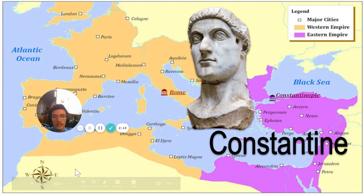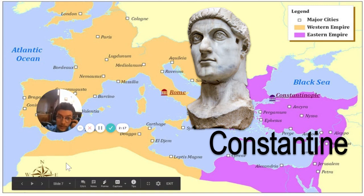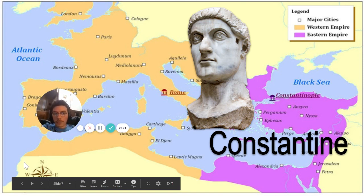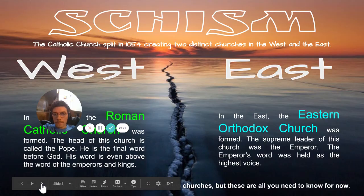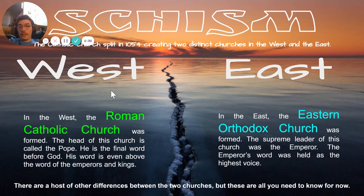Constantine led Constantinople and the Eastern empire, and he made Christianity the official religion of the Eastern empire. Then in the year 1054, the Great Schism happened — that's the event in which the Catholic Church split into two, creating two distinct churches in the West and the East.